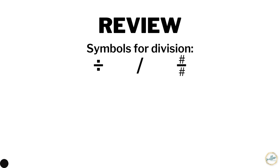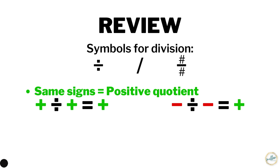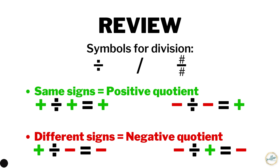Division has specific symbols also. You might see the division symbol, the slash, or even a fraction — remember that a fraction means division. The same sign rules apply for division as they do for multiplication: dividing two numbers with the same sign gives you a positive quotient, and dividing two numbers with different signs gives you a negative quotient.